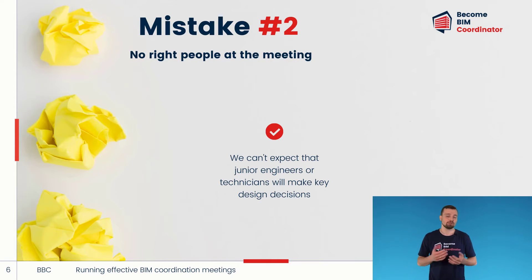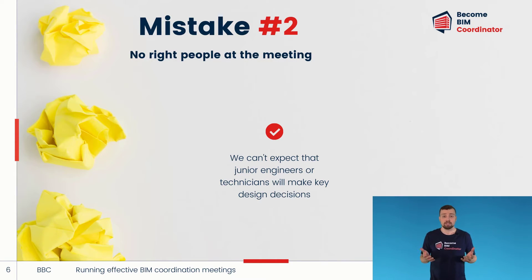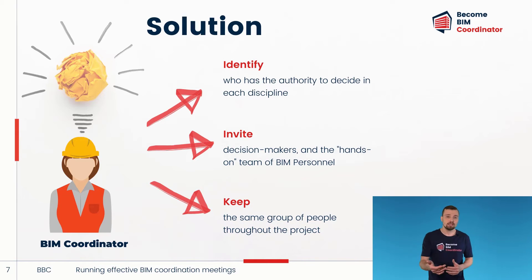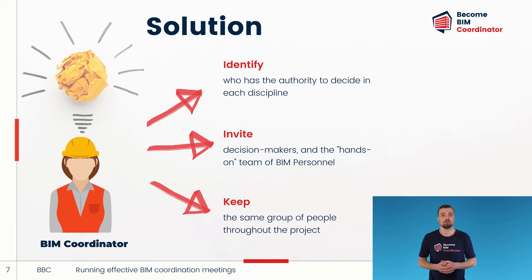The next mistake is not inviting the right people to the meeting. Who are the right people? The answer is those who have the authority to make decisions. During a meeting, when we need to make important decisions about system redesigns, we can't expect technicians or junior engineers to make such key decisions — they don't have the authority. A BIM coordinator will need to identify who the decision-makers are from each discipline. This can vary depending on the type and stage of the project and what issues will be discussed at the meeting.